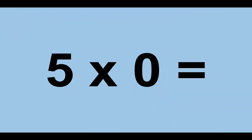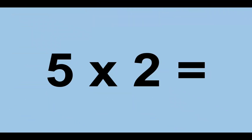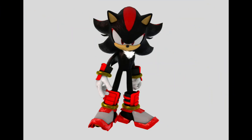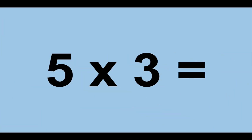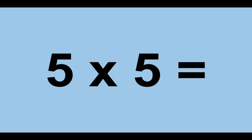Five times zero equals zero. Five times one equals five. Five times two equals ten. Five times three equals fifteen. Five times four equals twenty. Five times five equals twenty-five.